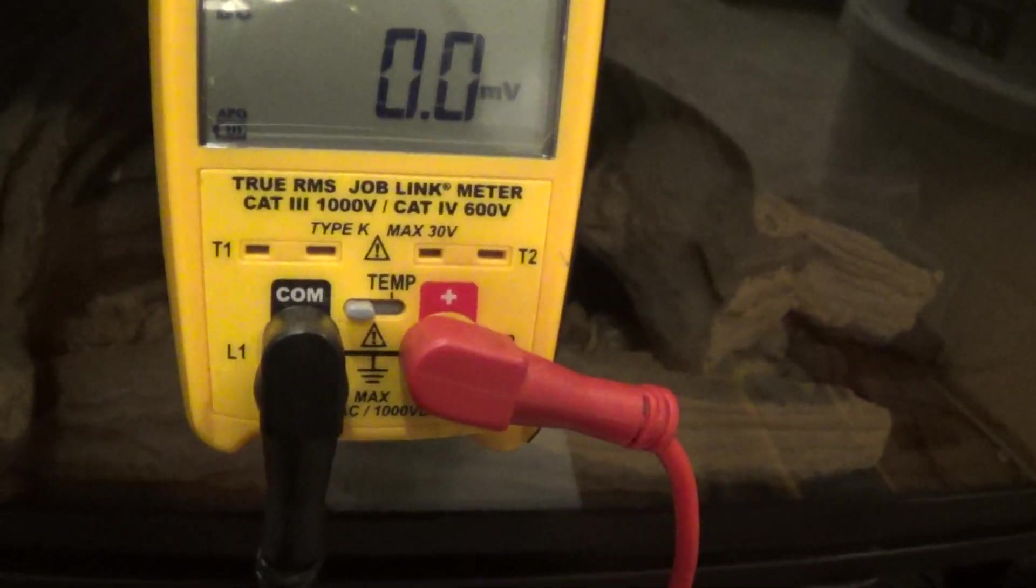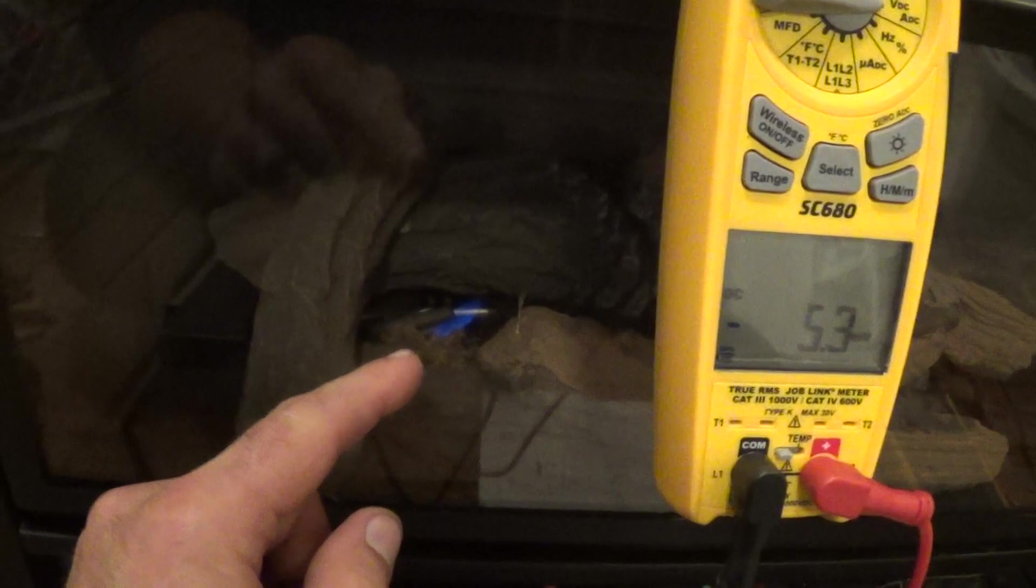All right, so now we're lit. You can see the voltage climbing—one volt, no, not enough. Two volts, three volts, no. Four, okay. Right around four is when the thermocouple was sending enough power to the gas valve to keep the pilot solenoid open.